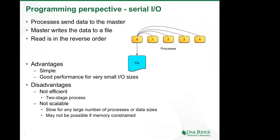Let's start with serial IO. Yes, you can do serial IO in an HPC environment, and sometimes it even makes sense. The idea is simple: all processes send their data to the master process, most commonly rank zero. The master process collects the data and writes it to a file in serial mode. The disadvantages are clear: it's a two-stage process—you have to communicate before you can do the IO—and it's not very scalable. If the aggregate data size for the IO exceeds the memory of the master process, this approach may not even be feasible.